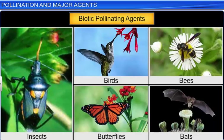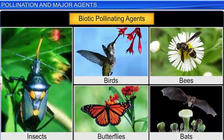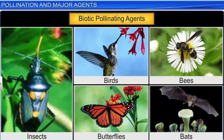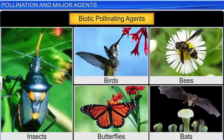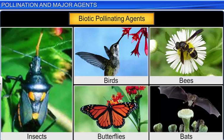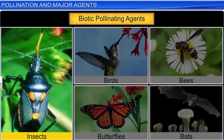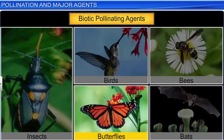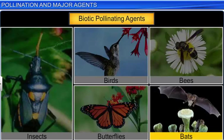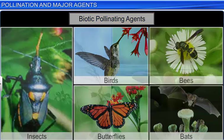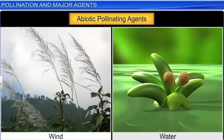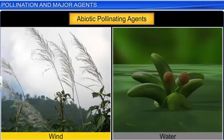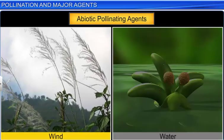In both cross-pollination and self-pollination, pollinating agents play a vital role. These agents include biotic agents such as insects, birds, bees, butterflies, and mammals such as bats, as well as abiotic agents such as wind and water.